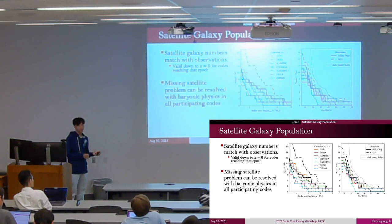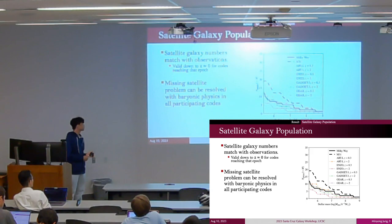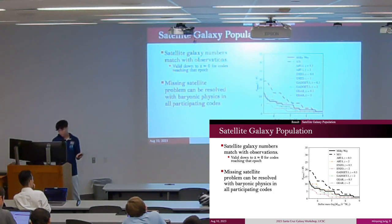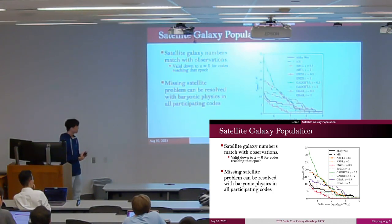We checked whether this is still valid for z=0. We have four codes that reach close to z=0 and compare this result with observational data. Although the intercode difference is quite increased at least near z=0.3, all simulations show similar satellite galaxy populations with the observational data.